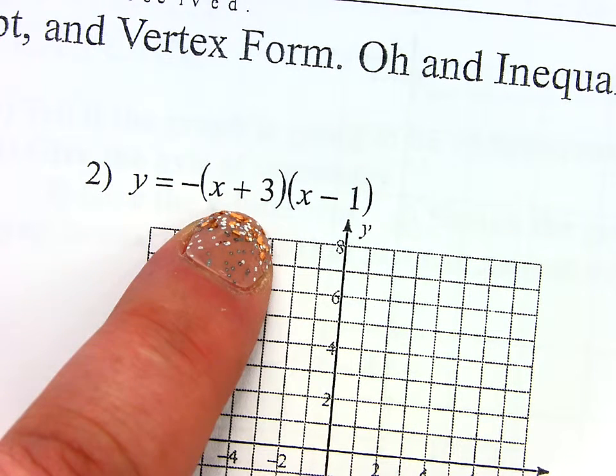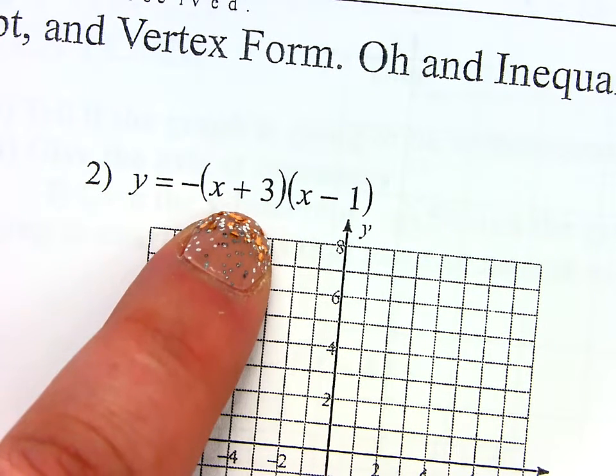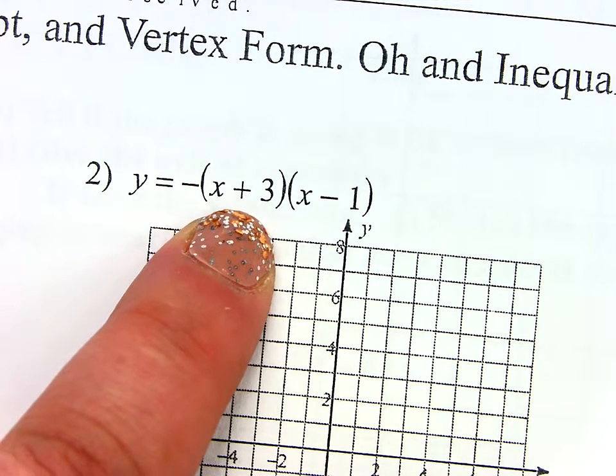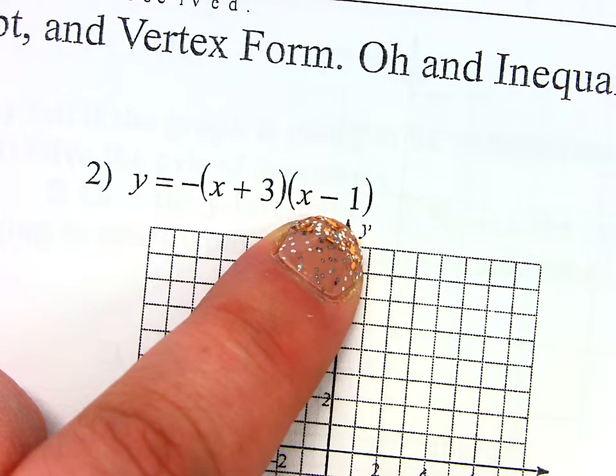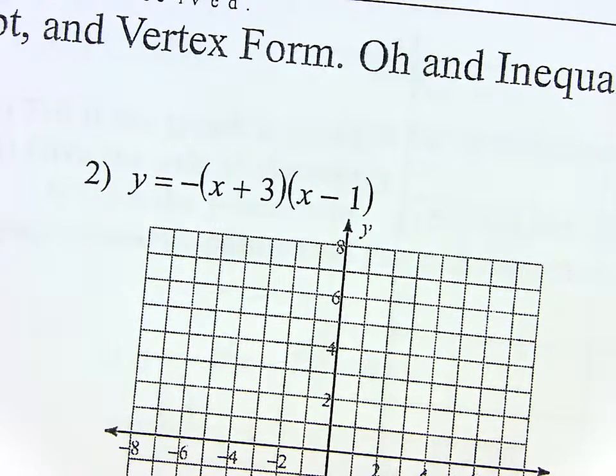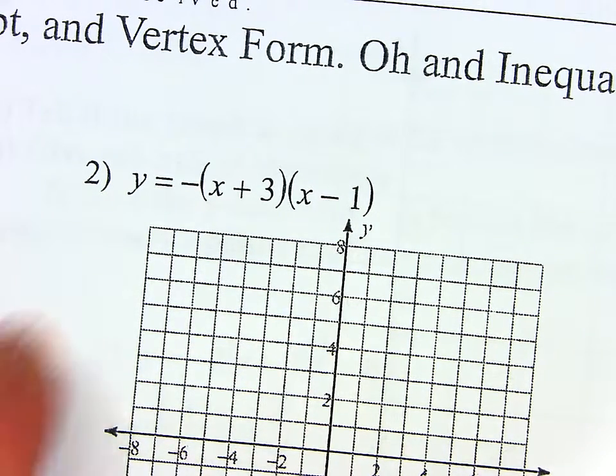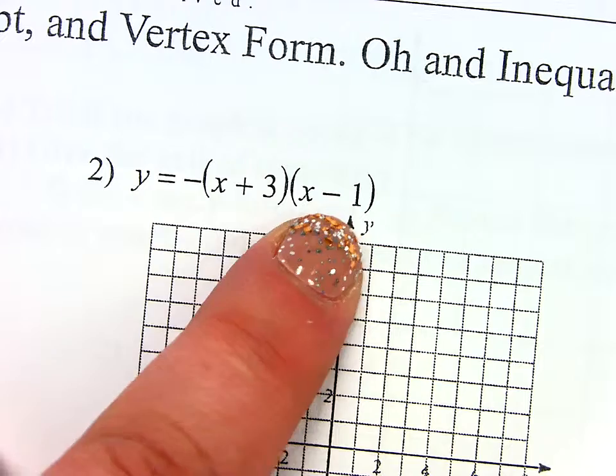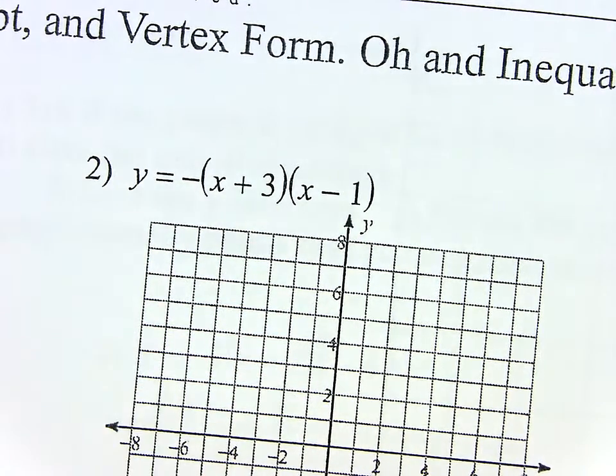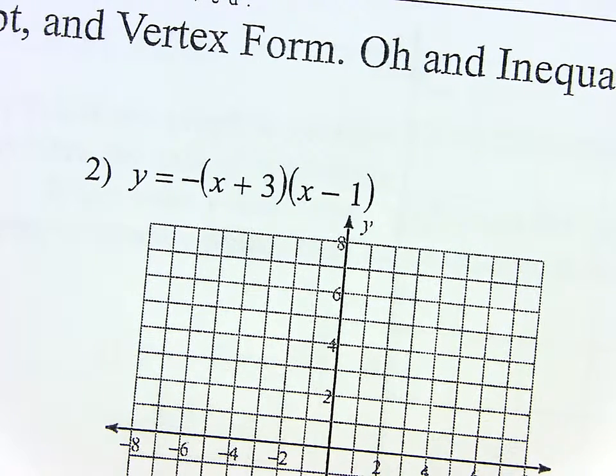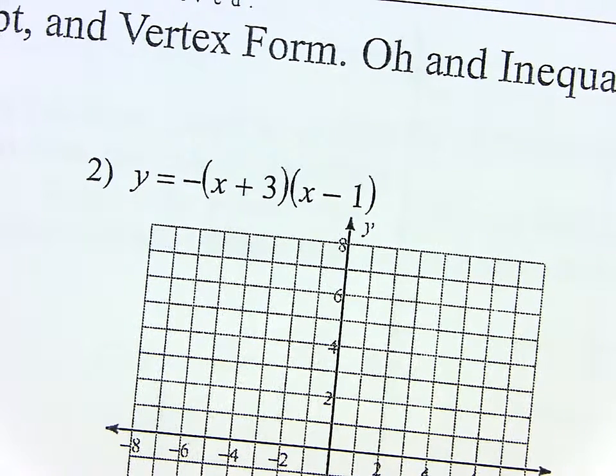It's where the parabola crosses the X axis. So this quadratic has already been factored. Here's its two factors. It's telling you where it's crossing the X axis. You got to set each factor equal to zero, so it's actually going to be at negative three and at positive one. Do you see that? Do you remember solving quadratics?